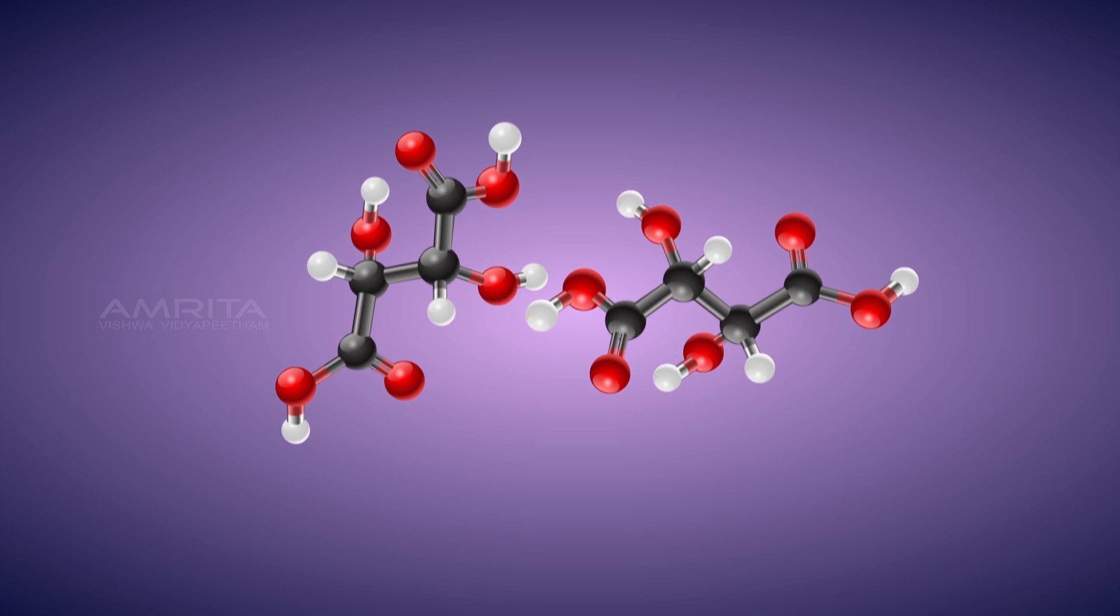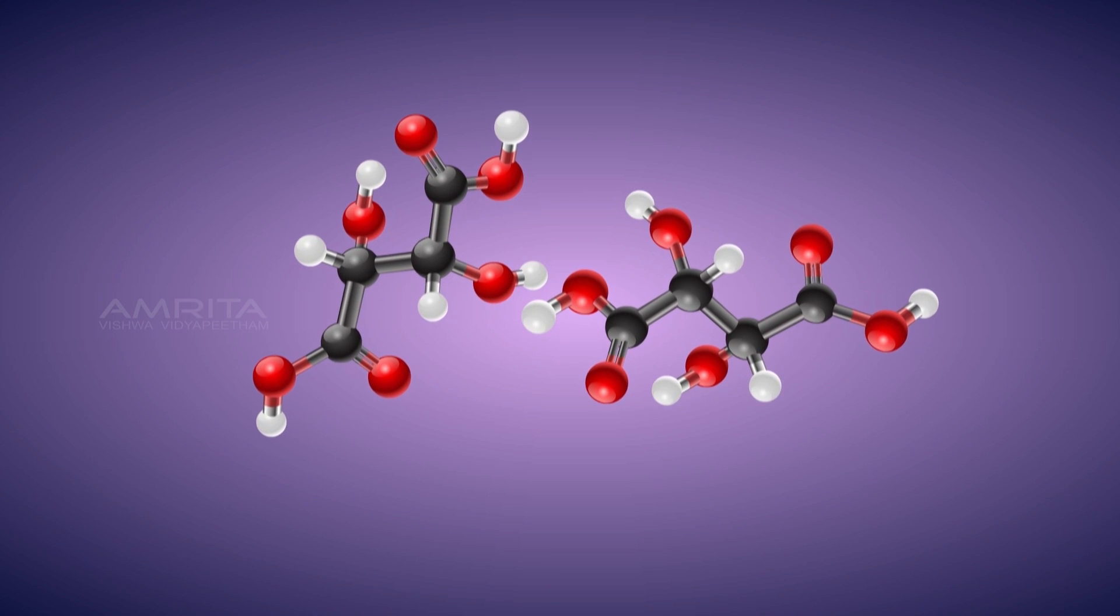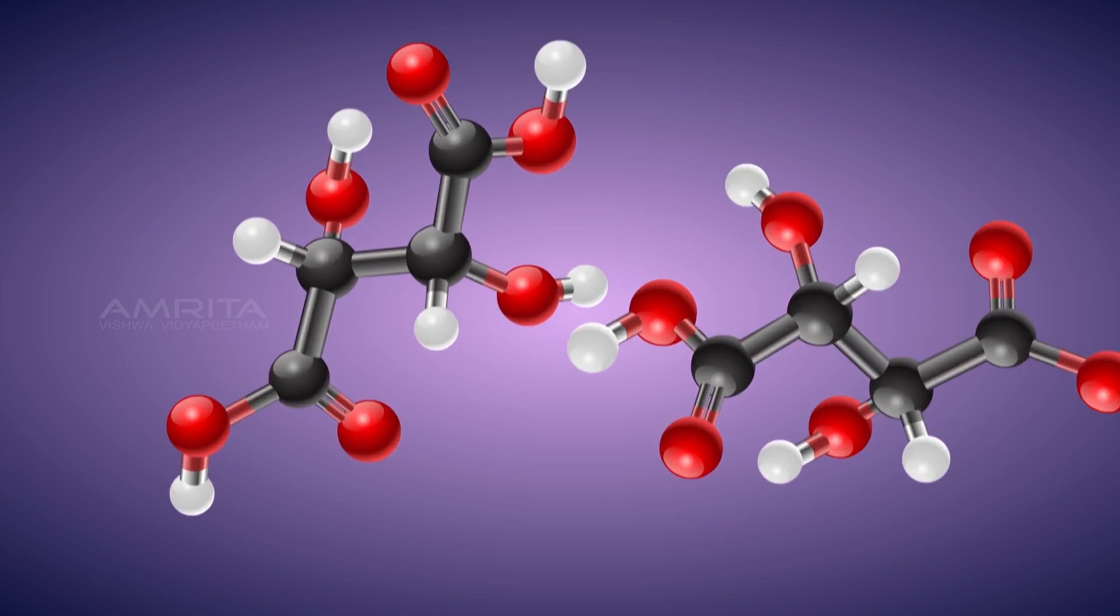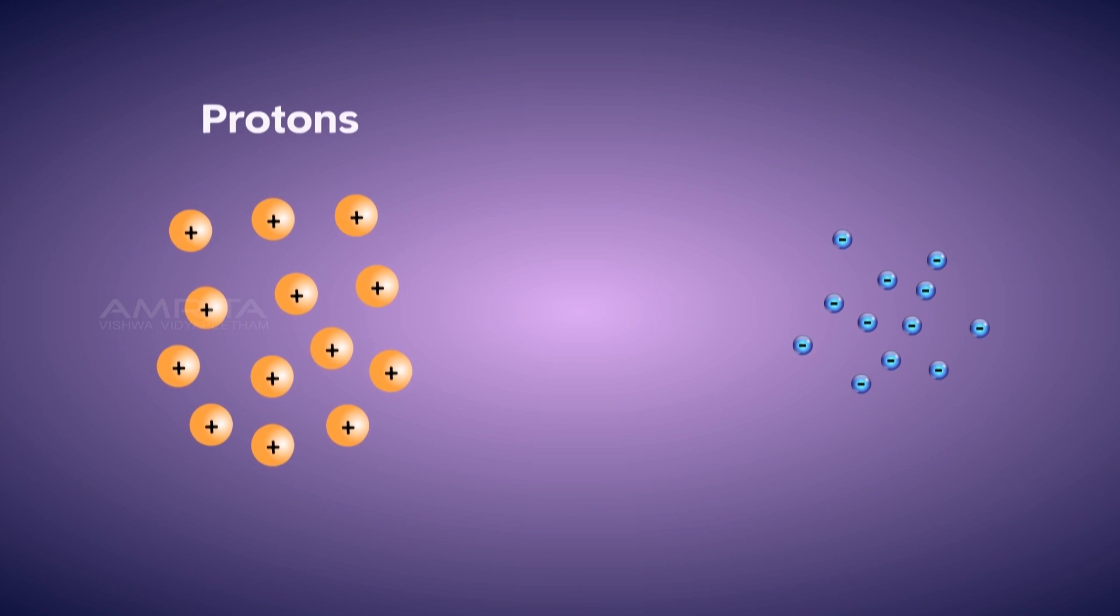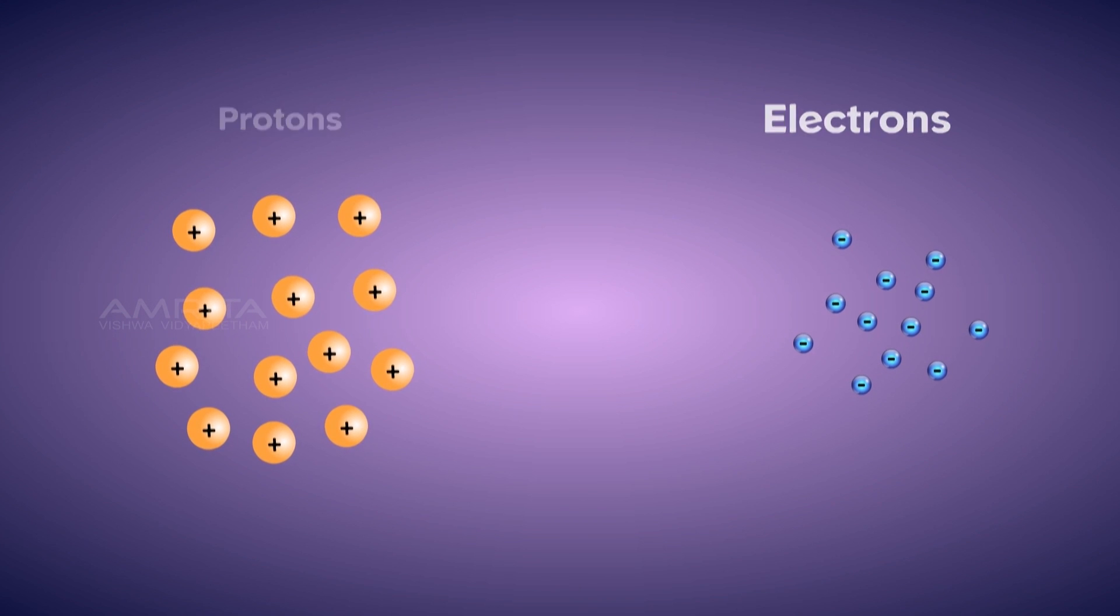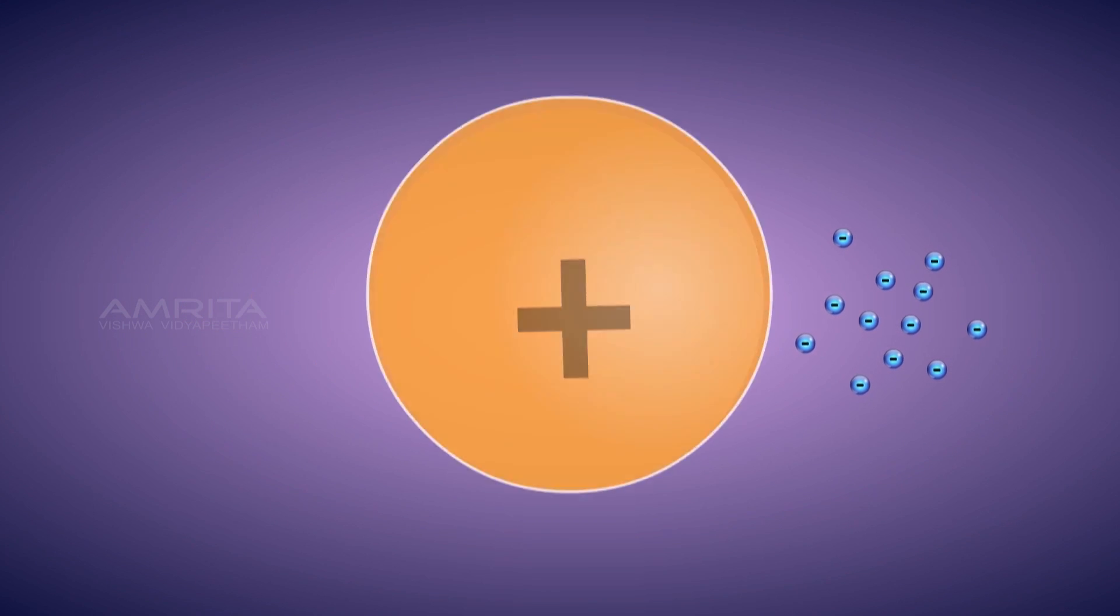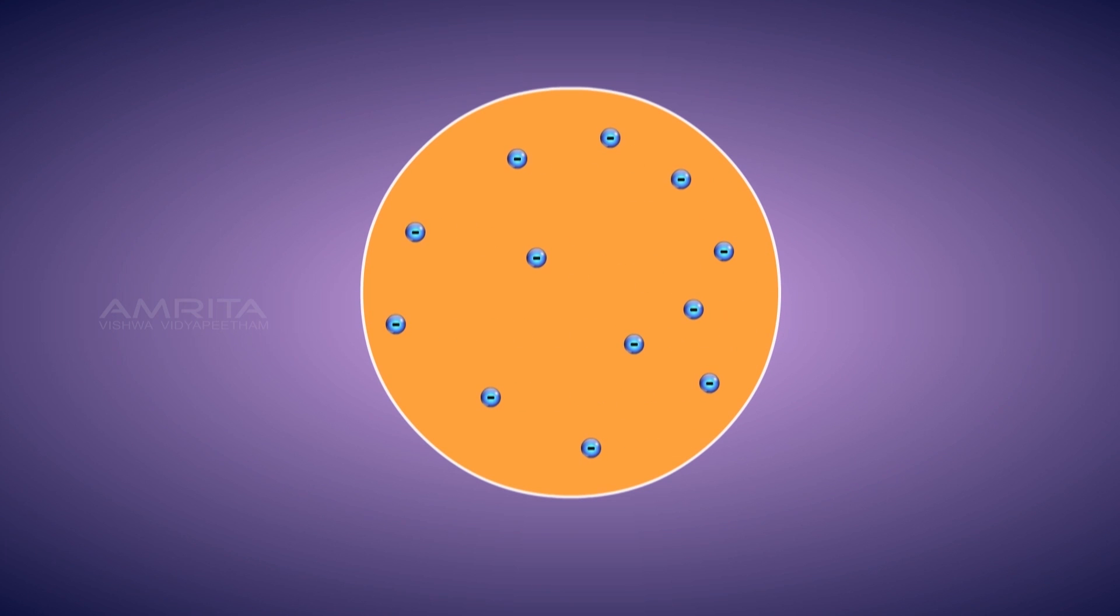So, how do we explain the arrangement of protons and electrons inside an atom? To explain the arrangement of protons and electrons inside the atom, J.J. Thompson prepared a model for the structure of the atom, known as Thompson's model of atom.